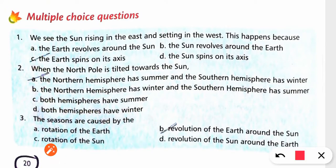Multiple choice question. We see the sun rising in the east and setting in the west. This happens because the earth is spinning on its axis. Because earth is spinning, that's why we see this. Otherwise the sun is in its position.